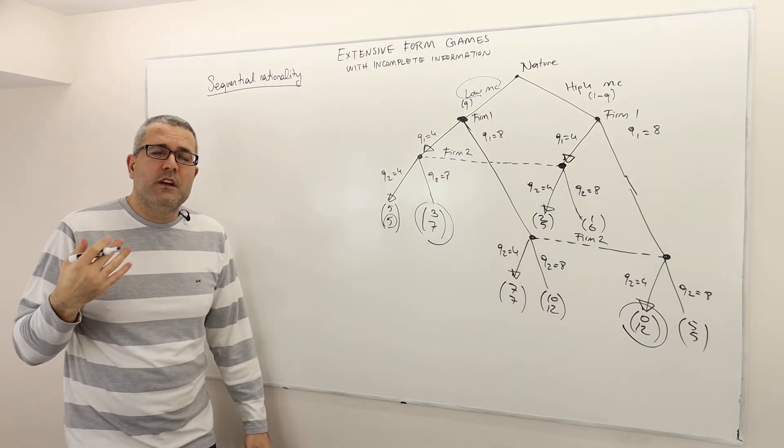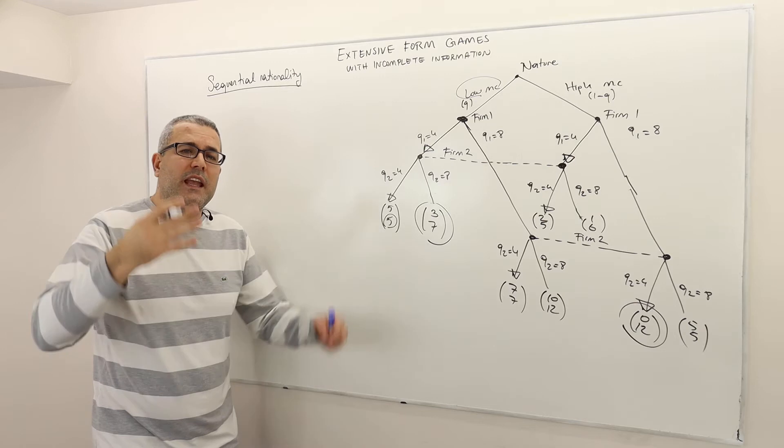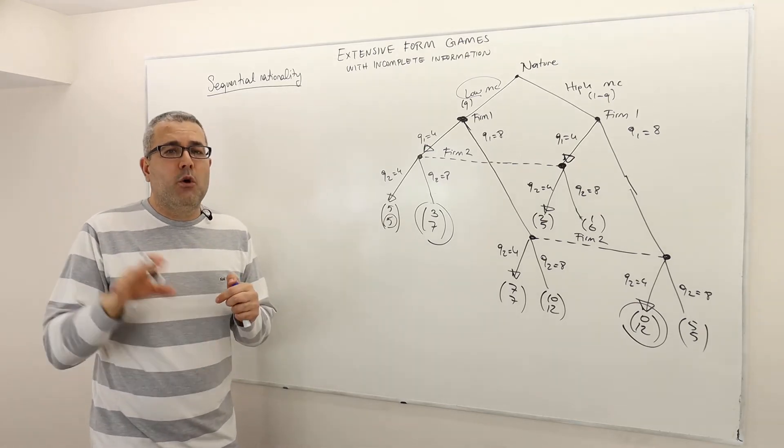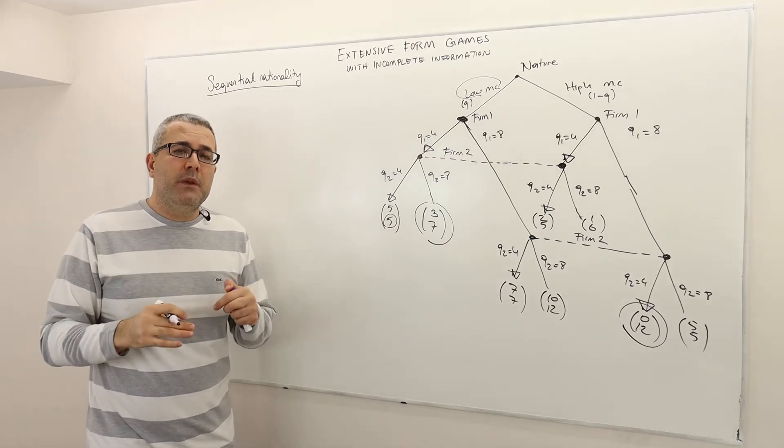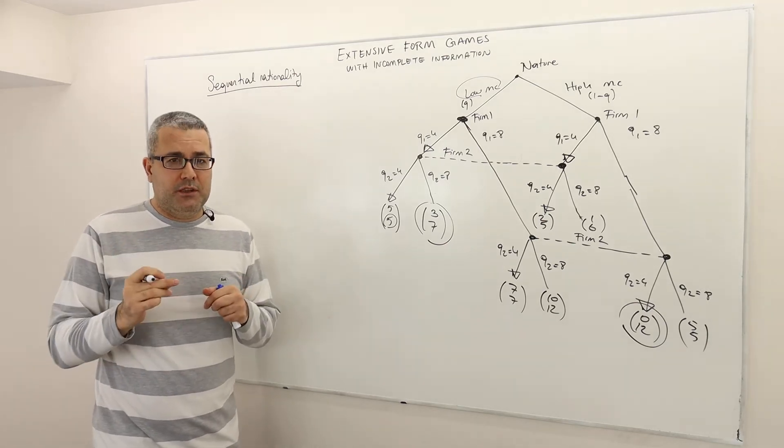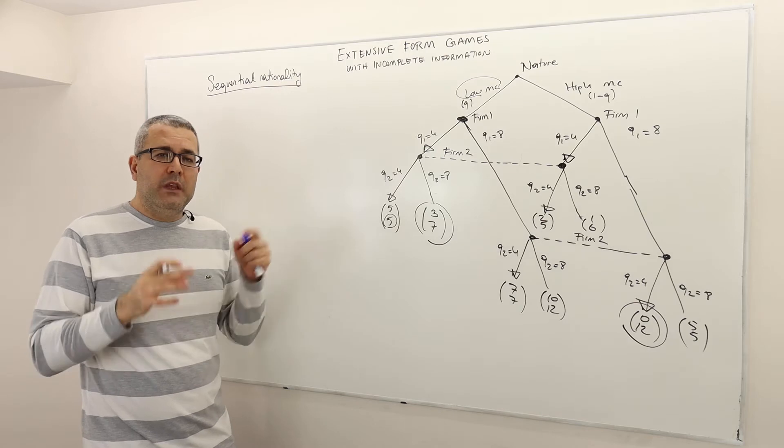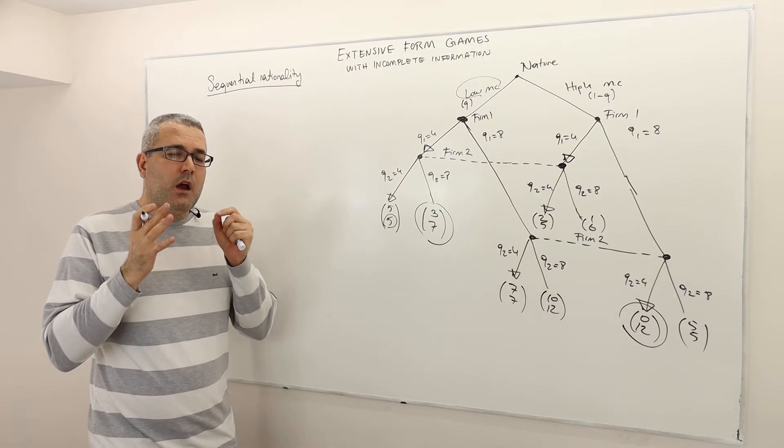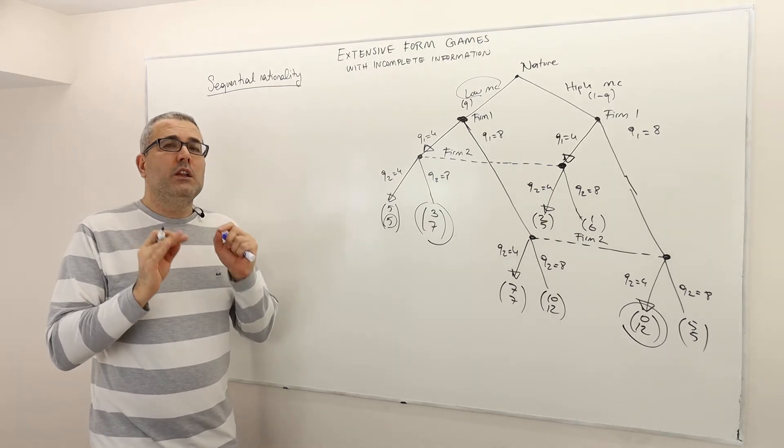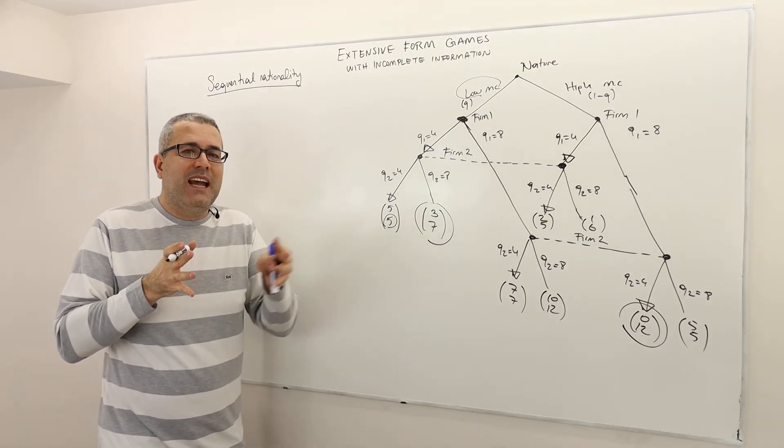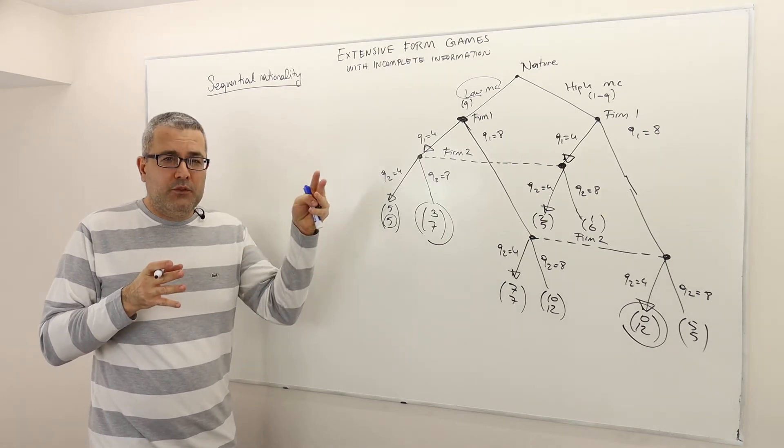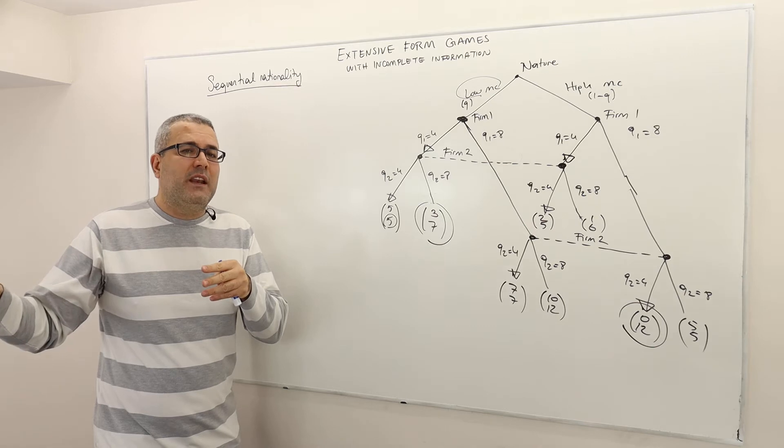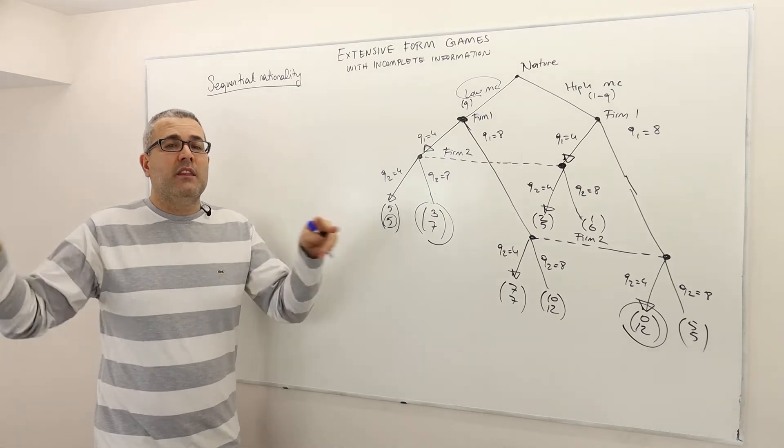Remember the idea of sequential rationality is in every subgame of the game, whether this subgame is reached or not, players should be choosing optimal strategies. The Nash equilibrium ignores this because it only looks at the subgames that will be reached according to the strategy profile.